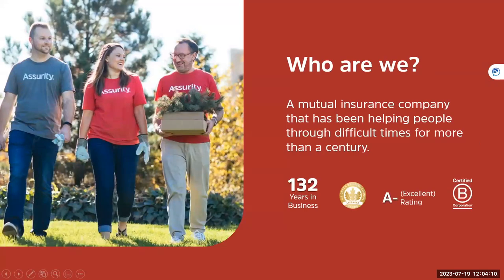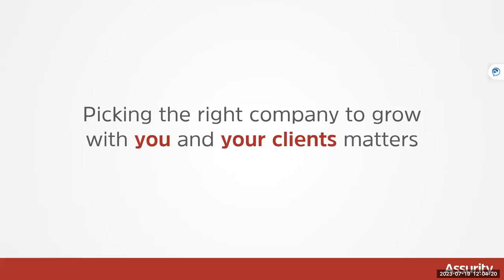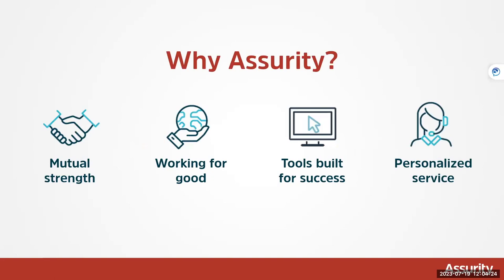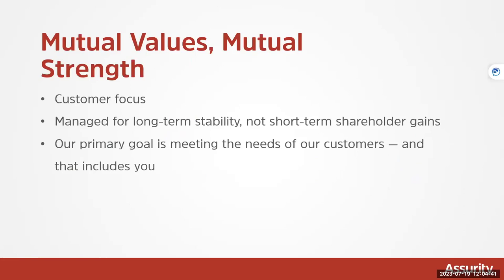Assurity is a 132-year-old company; we've been helping clients for over a century, and I think that means something — you can see our A- rating. We are a mutual company, and I think that matters. By design, we are owned by our policyholders. Anyone who buys this product or critical illness or whatever suite of products you're utilizing — they are by design owners of Assurity. We're going to do what's in the best interest of our policyholders, which is a differentiator in the industry.